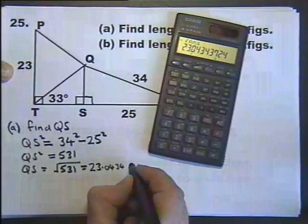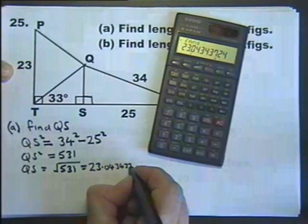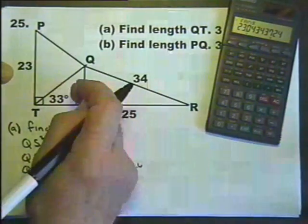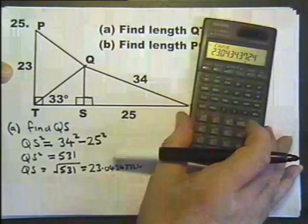23.04. I'm writing this small because I know I'm going to run out of space if I don't. Now, I'm not going to correct that because I need that for the next bit.